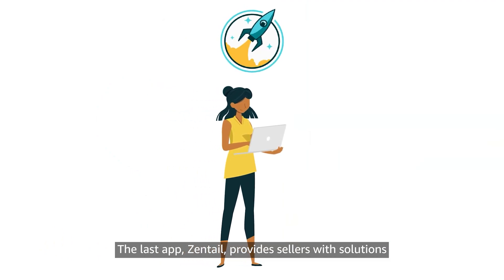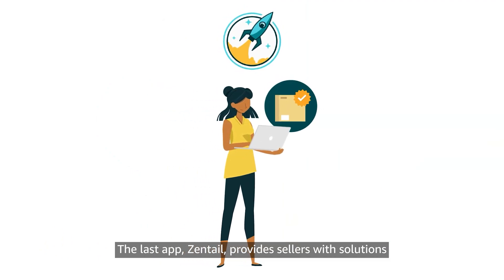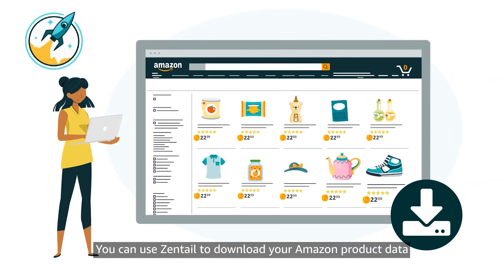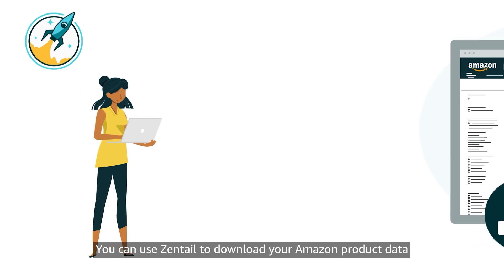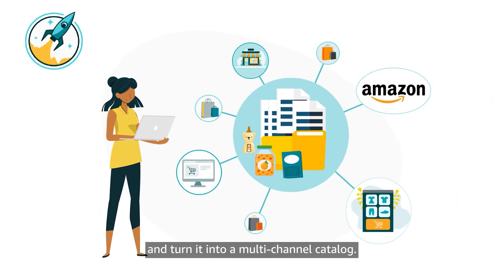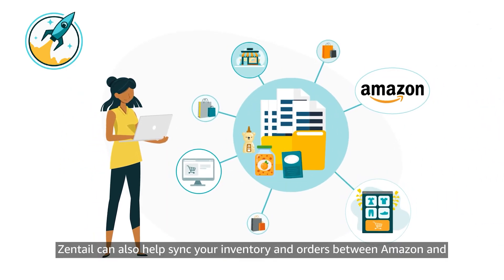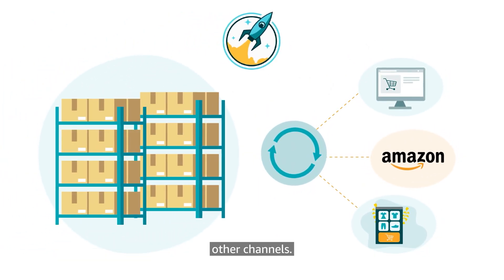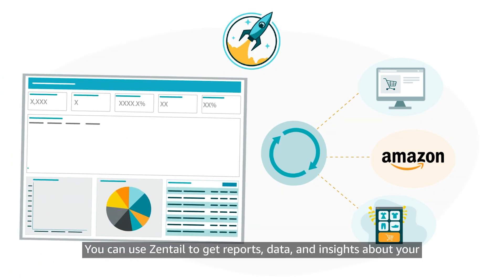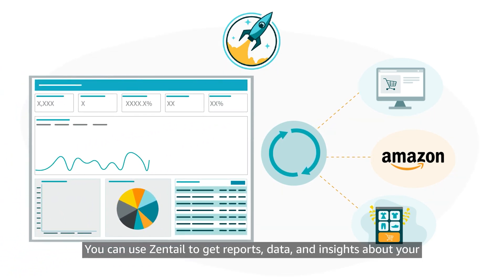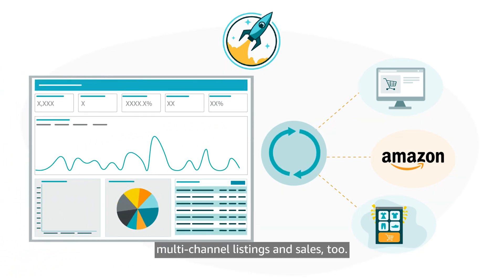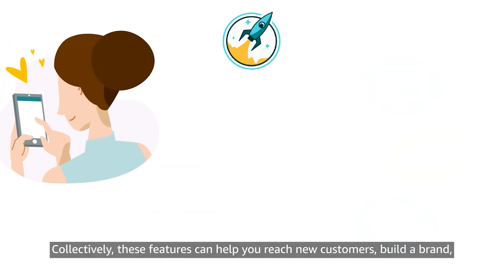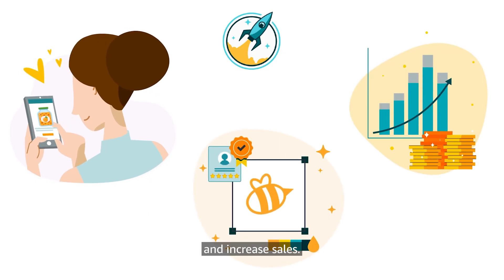The last app, Zentail, provides sellers with solutions for multi-channel listings and fulfillment. You can use Zentail to download your Amazon product data and turn it into a multi-channel catalog. Zentail can also help sync your inventory and orders between Amazon and other channels. You can use Zentail to get reports, data, and insights about your multi-channel listings and sales, too. Collectively, these features can help you reach new customers, build a brand, and increase sales.